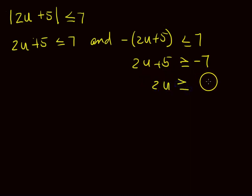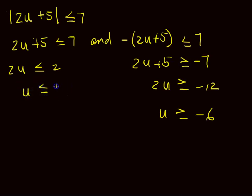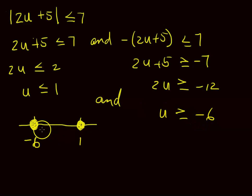Subtract 5 from both sides — adding or subtracting doesn't change the direction. Subtracting 5 from negative 7 gives negative 12, then dividing by 2 gives negative 6, so u is greater than or equal to negative 6. For the other side: subtract 5 from 7 to get 2, then divide by 2 to get 1, so u is less than or equal to 1. The important conjunction is AND — both must be true simultaneously.